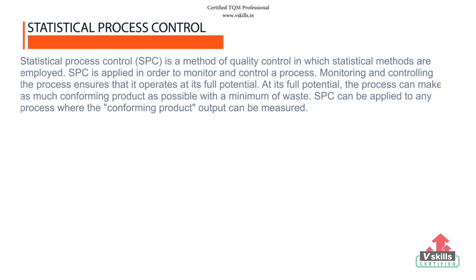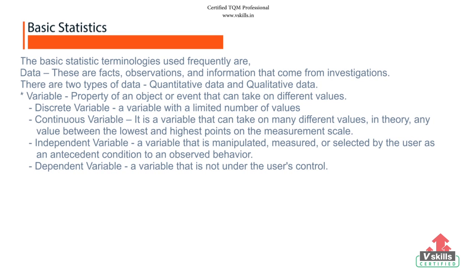Total quality management requires that the processes should be improved continually by reducing variability. Let's now discuss the basic statistics terminologies we use. Data. They are facts, observations, and information that come from investigations. There are two types of data: Quantitative data and qualitative data.